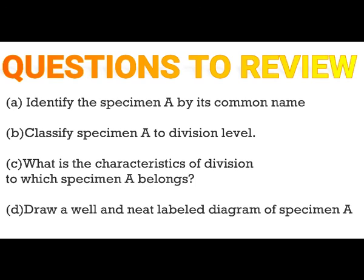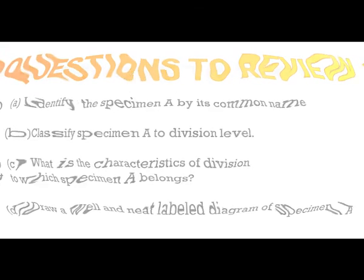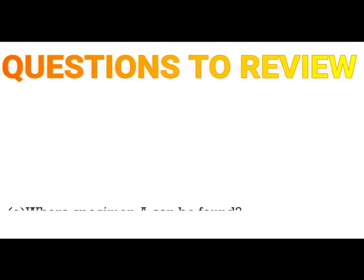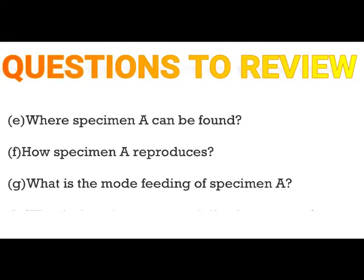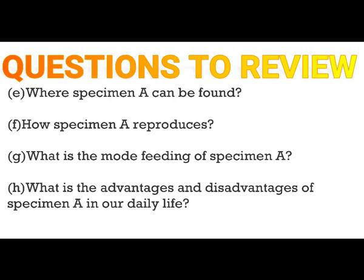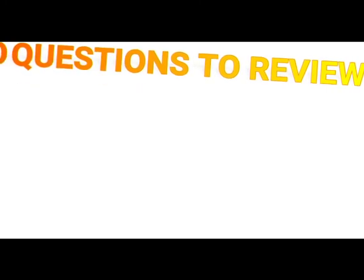The fourth question: draw a well-labeled diagram of specimen A. The fifth question: where can specimen A be found? The sixth question: how does specimen A reproduce? The seventh question: what is the mode of feeding of specimen A? And finally: what are the advantages and disadvantages of specimen A in our daily life?